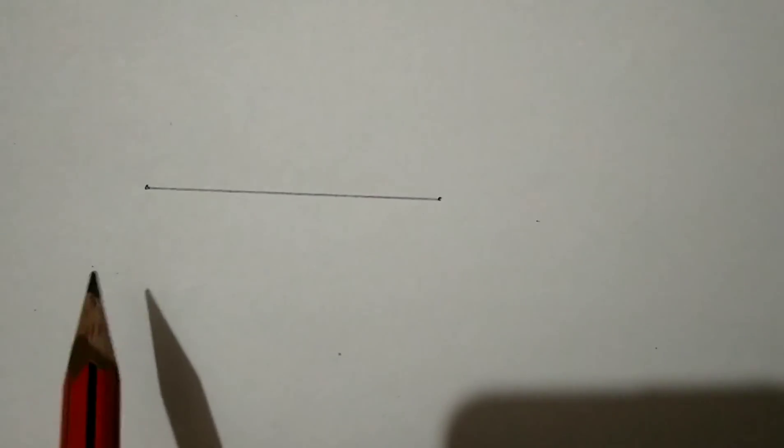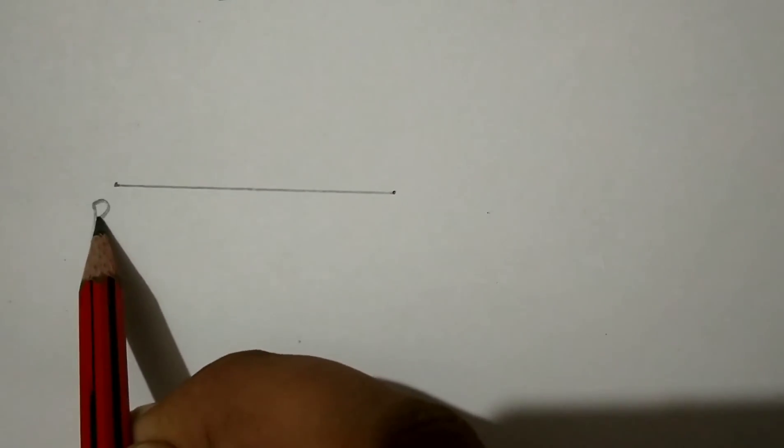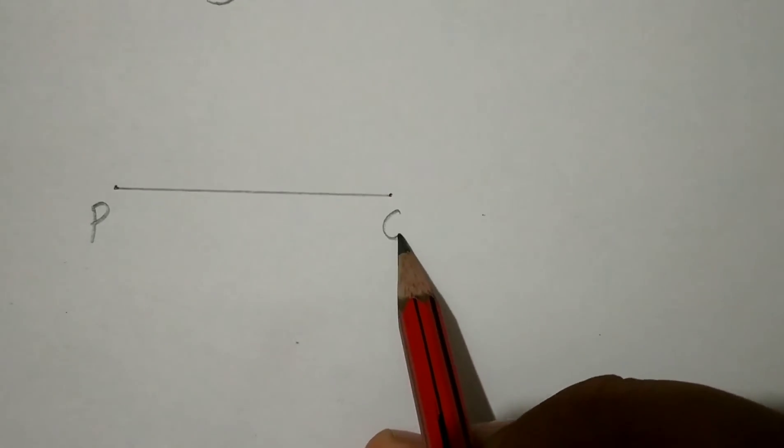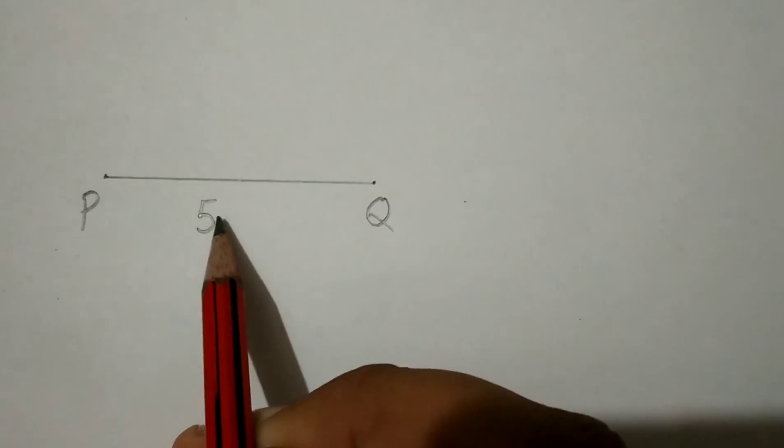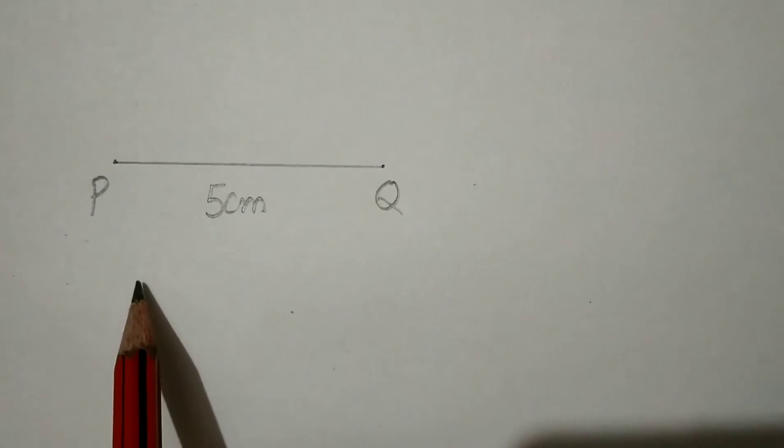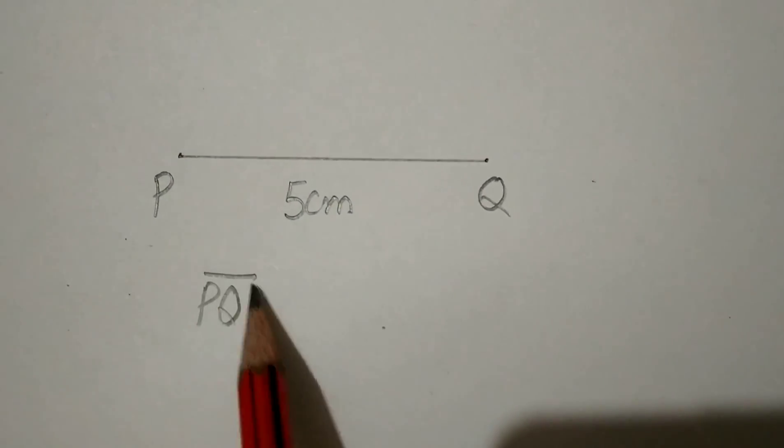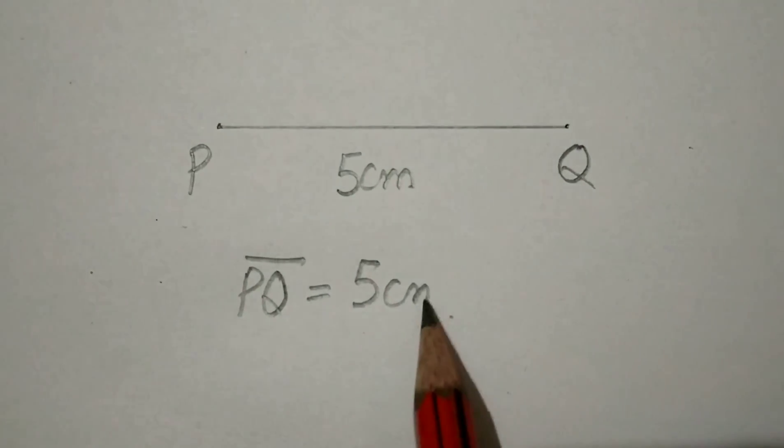We will mark this point as P and this point as Q. The length of this line segment is 5 centimeters. Now we have drawn line segment PQ whose length is 5 centimeters.